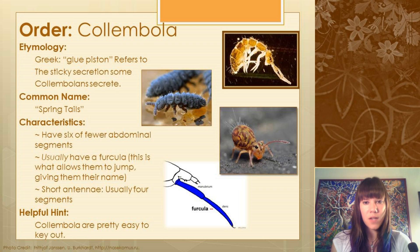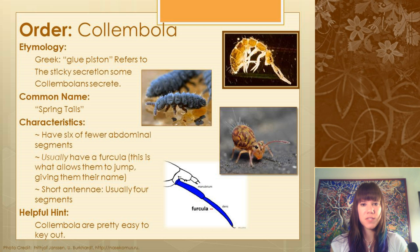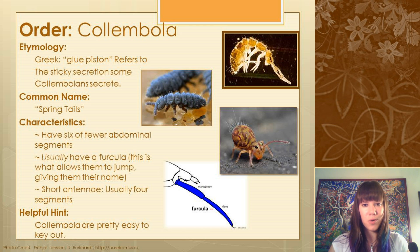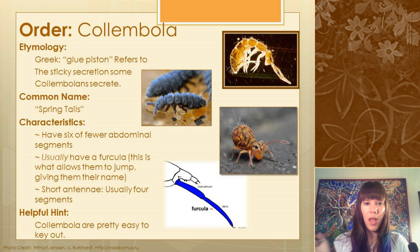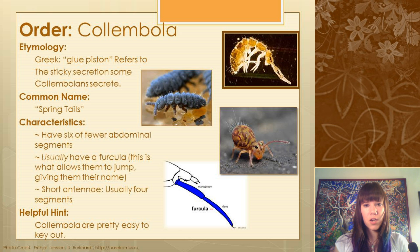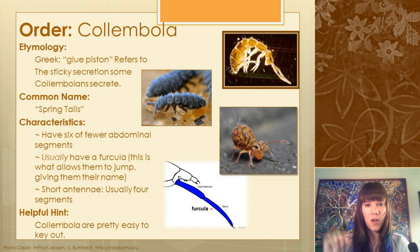The next order of hexapods is Collembola. In Greek this just means 'glue piston' because it was thought that many of them could release a sticky substance from an organ called a collophore — a little tube that sticks out of their abdomen. While some can do this, it's mostly used for fluid and water balance. Their common name is springtails, because one of their characteristics is a curled tail called a furcula that they use to jump like a spring.